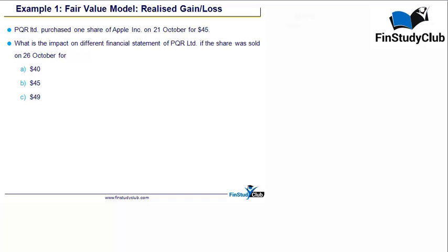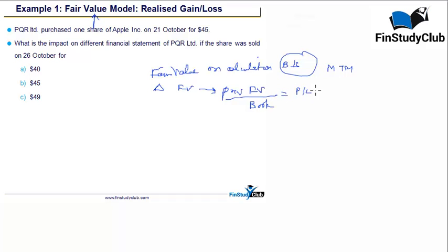So let's look at the fair value model and the first example wherein we will try to understand the realized gain or loss part. Now, obviously, just a very quick recap for the fair value model. The model says that whatever is the subject matter, in which case, in my case, it is passive investments right now. So the model says whatever is the subject matter, we are trying to put a number in terms of the fair value on the calculation date. And that's the value which will be used for my balance sheet. So it's always marked to market. And whatever is the change in the fair value compared to the previous fair value recorded in the books, whatever is the delta goes to the P&L or income statement.